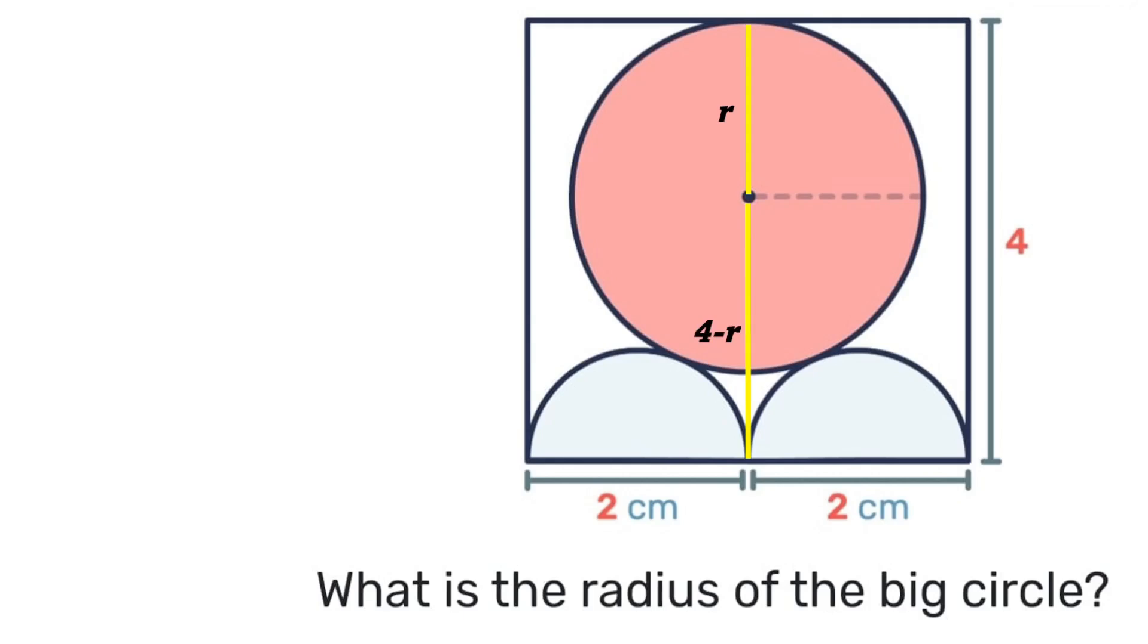Looking at this small semicircle on the right, if the diameter is 2, then the radius will be half of 2, which is 1. We have so far two legs of a right-angle triangle. If we complete the hypotenuse, we know that this distance here will be 1, which is the radius of the small semicircle, and that distance will be r, which is the radius of the circle we're looking for. So altogether, that hypotenuse will be r plus 1.